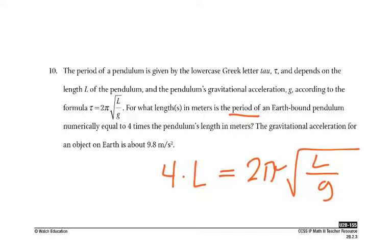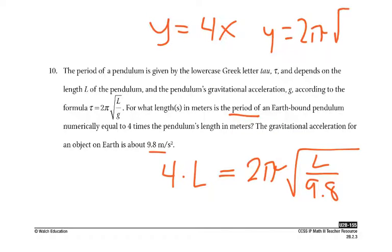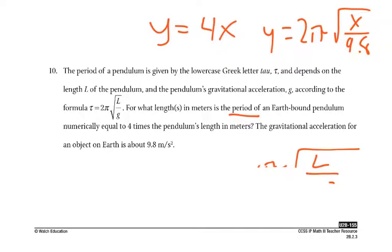Okay. Is the period of an earthbound pendulum numerically equal to 4 times the pendulum's length? So we go 4 times L. We want to know when that's equal to this, right? Now the pendulum's gravitational acceleration would be 9.8. So we put 9.8 here. So if I split this up and make this 4x, y equals 4x, and y equals 2 pi square root of x over 9.8, we should be able to graph them both and using, looking at where they're the same, and that'll tell us the length.